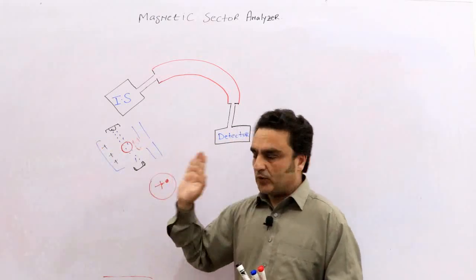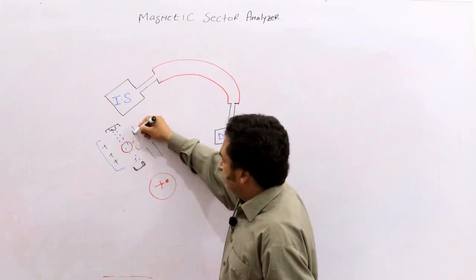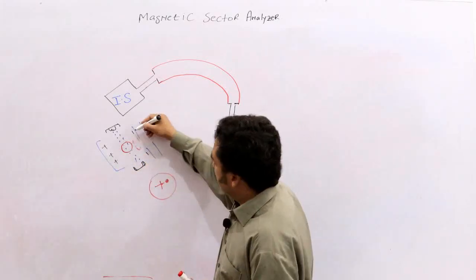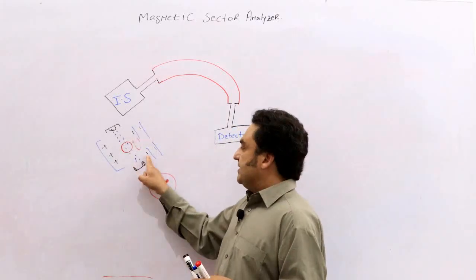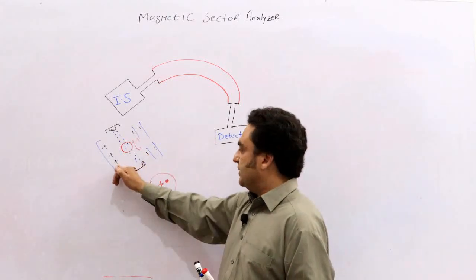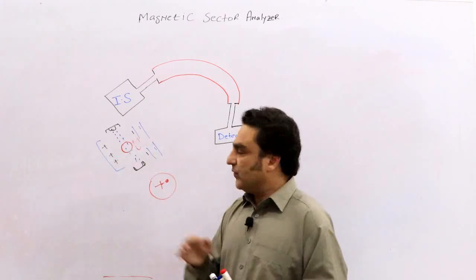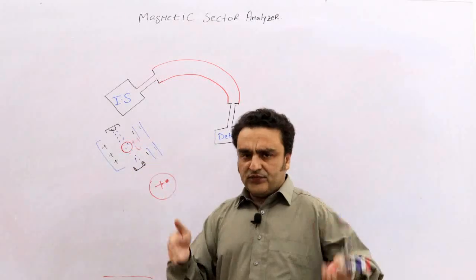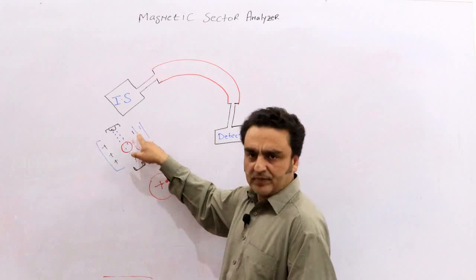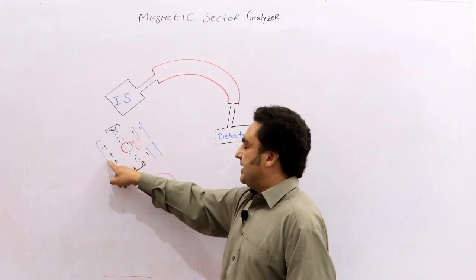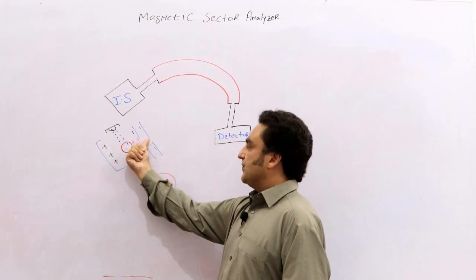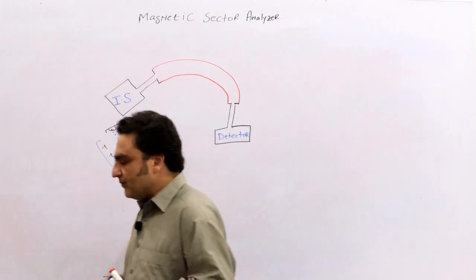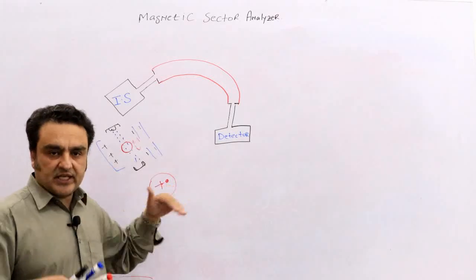The propeller plate is propelling the ion, and the other plates are attracting it. For sake of understanding, I am writing them as negative, though they are not truly negative — they are just less positive than the propeller plate. So the positive charge is pushed by the propeller plate and attracted by the less-positive plates, causing it to accelerate and move out toward the analyzer. This was explained in great detail with voltage values in the previous lecture.